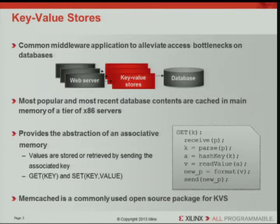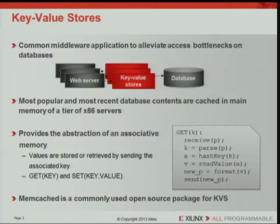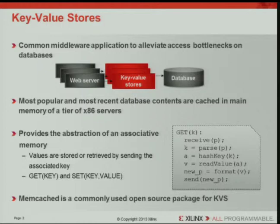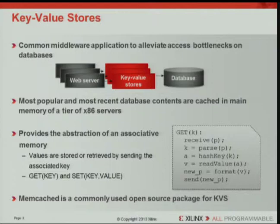Key value stores are a common middleware application in data centers, used to alleviate access bottlenecks on databases. They are placed between the tier of web servers and the database tiers, where they cache the most popular and most recent content from the database. Key value stores are typically implemented with bog-standard x86 servers. They provide the abstraction of an associative memory — also called a hash table or CAM — solving the lookup problem. Values are stored and retrieved by sending an associated key rather than an address. The basic operations are a set and a get: the set writes a key-value pair into the store, whereas the get retrieves the value based on its associated key.